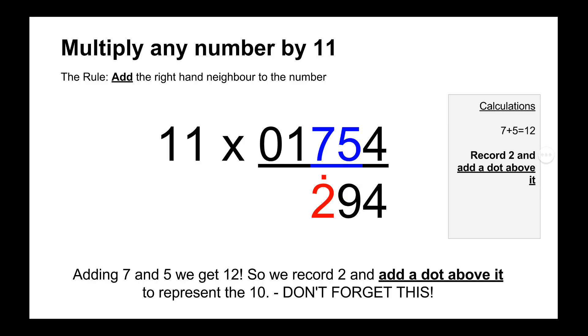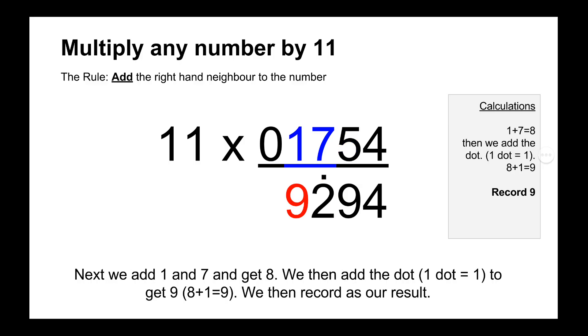So that dot just represents 1 times 10. And we have to make sure to add this dot onto our next answer, onto our next result. So then we move across to our next digit and we have 1, so we go 1 plus 7 equals 8 plus the dot from the 2, the carry 10, equals 9.